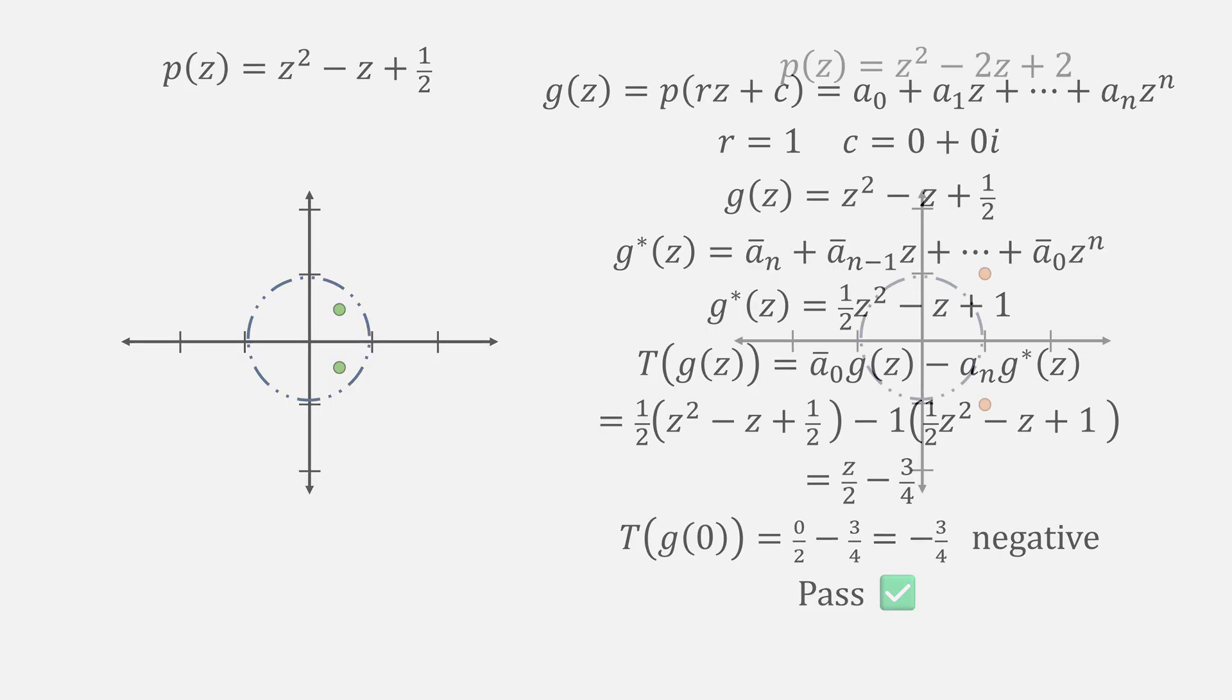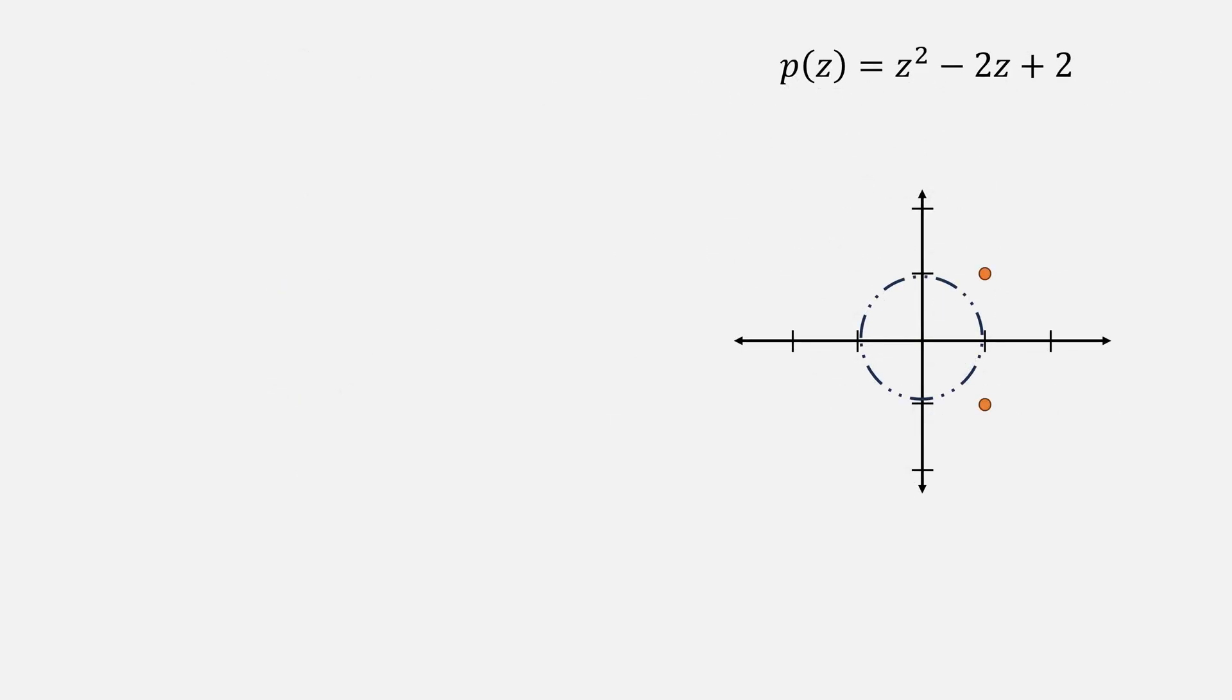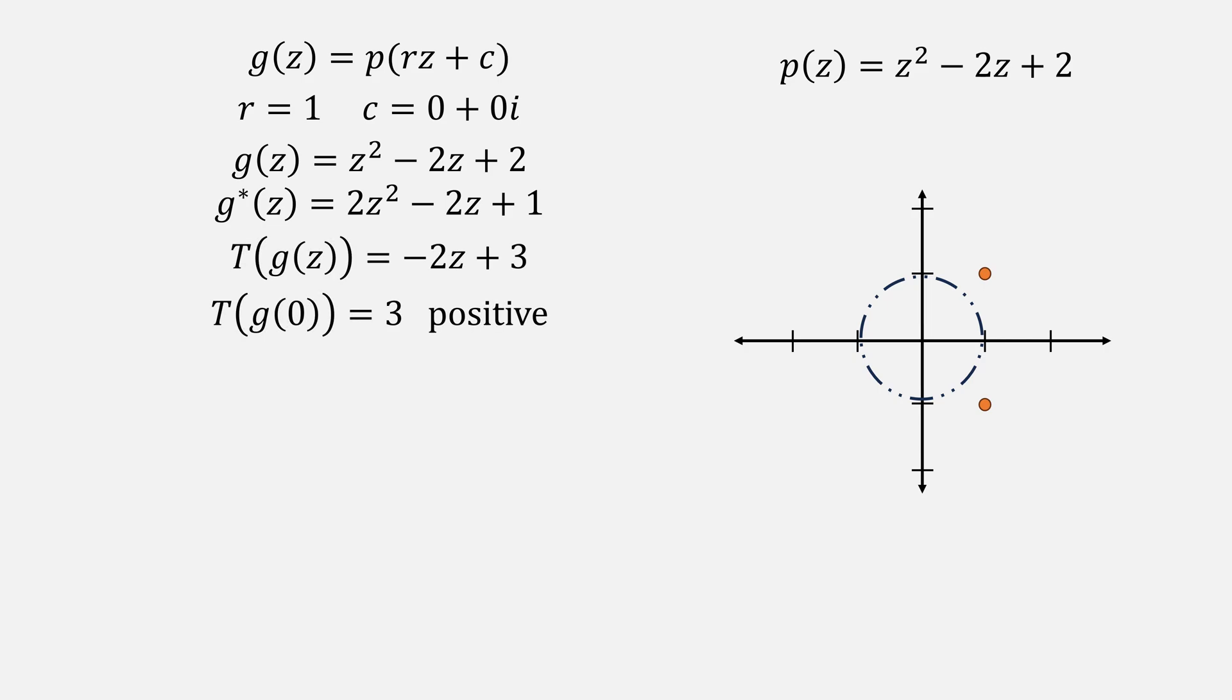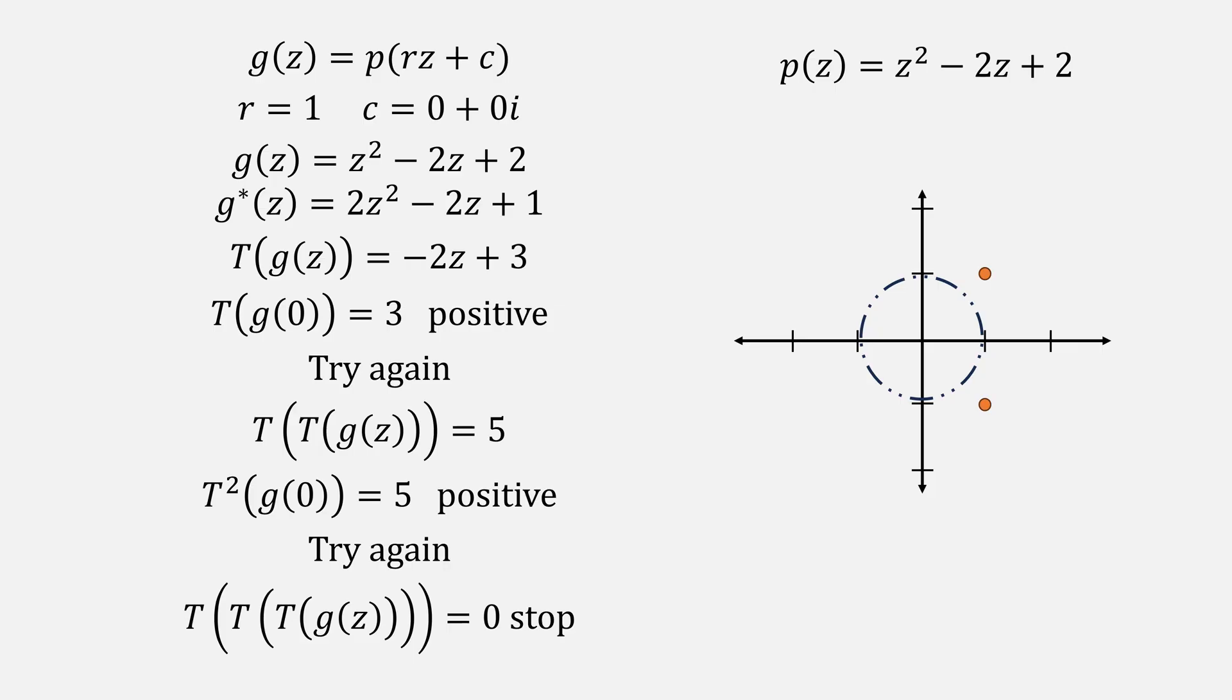With our new polynomial of z squared minus 2z plus 2, plug in our radius of 1 and center of 0 to come up with our equation for g, which is the exact same function. Then computing g star, reversing the coefficients and the complex conjugate, giving our equation for t of minus 2z plus 3. Plugging in 0 gives us a positive value, which means it fails the test. Redo with the new value for t. Find t of t of g is z, giving just 5 as our equation. Plugging in 0 gives us still back 5, being a positive value, meaning it failed. Try again with t of t of t of g. This gives us 0 and stop. It never passed any of the test. It means it does not contain a root.